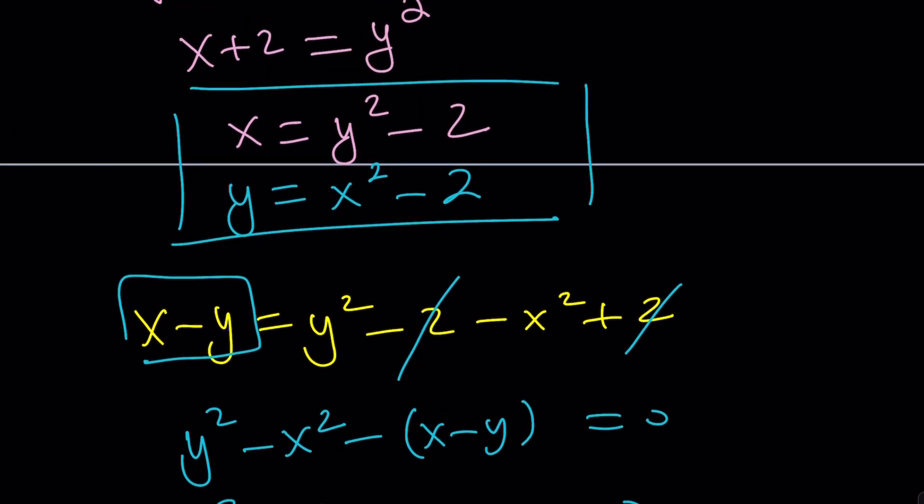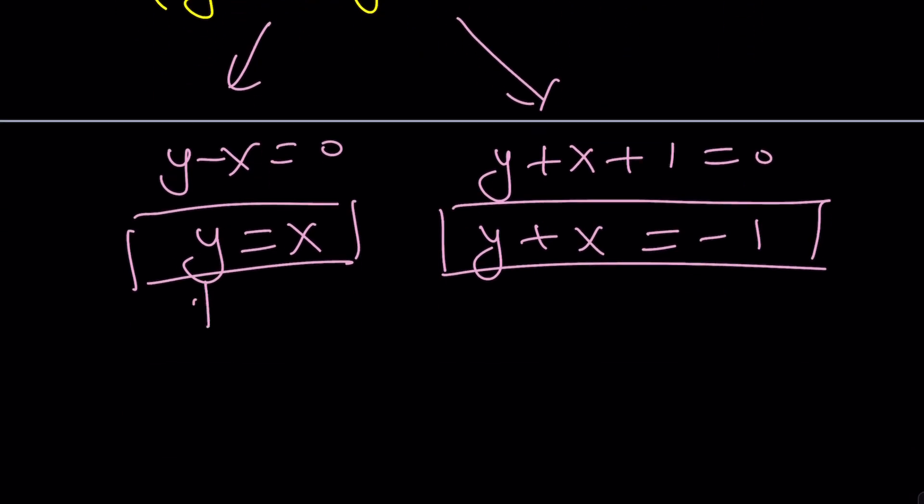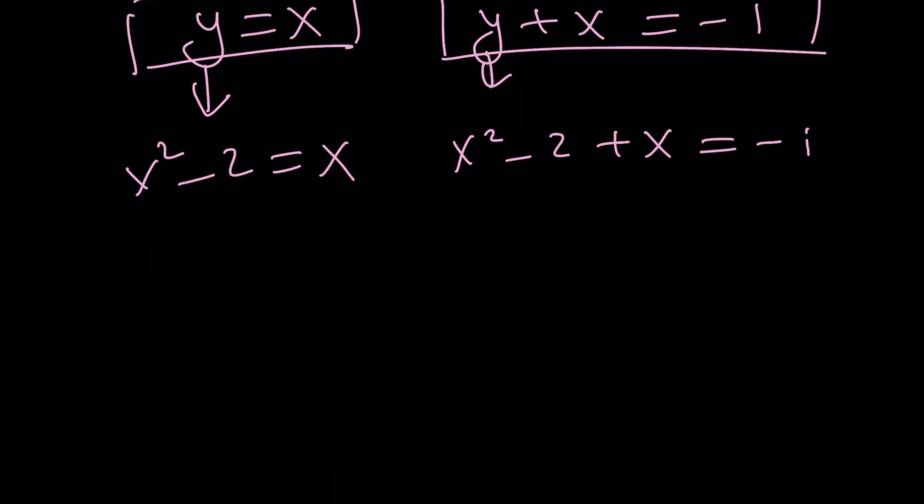y is equal to what? x squared minus 2. Awesome. Let's go ahead and replace y with x squared minus 2. And that gives us this equation and this equation. Right? Awesome. Let's go ahead and work on each one.